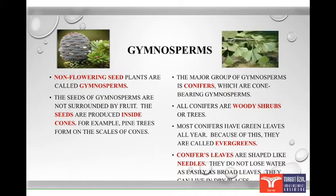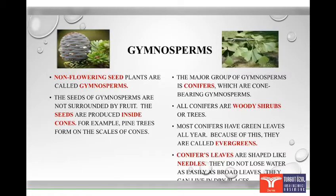Gymnosperms are known as non-flowering plants. The seeds of gymnosperms are not surrounded by fruit. The seeds are produced inside cones. For example, pine trees form on the scales of cones. The major group of gymnosperms is conifers, which are cone-bearing gymnosperms. All conifers are woody shrubs or trees. Most conifers have green leaves all year. Because of this, they are called evergreens.